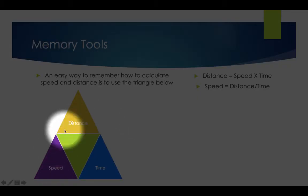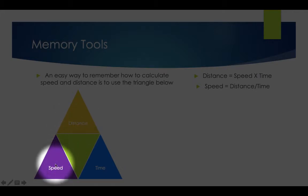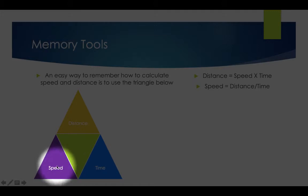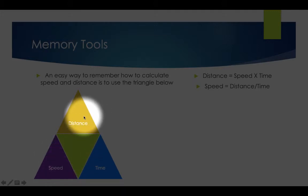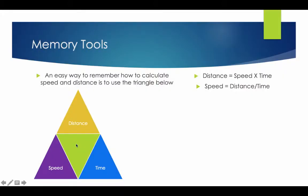If you use the triangle to work it out: distance equals speed times time. If you were trying to work out speed, it's distance divided by time. The three should work together.